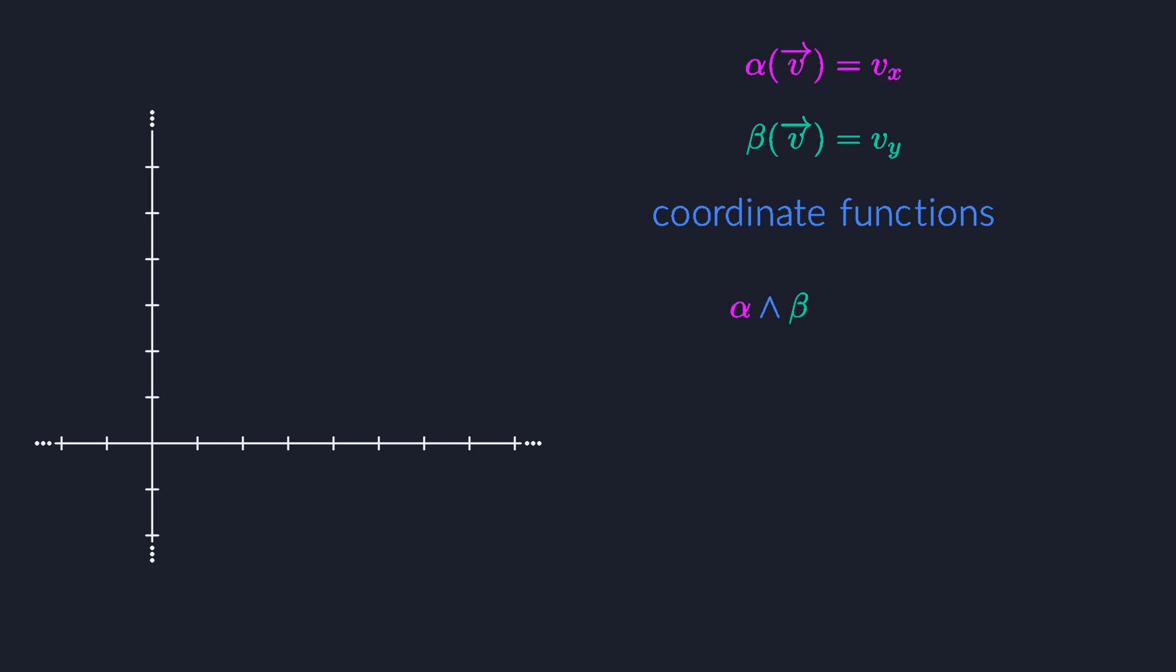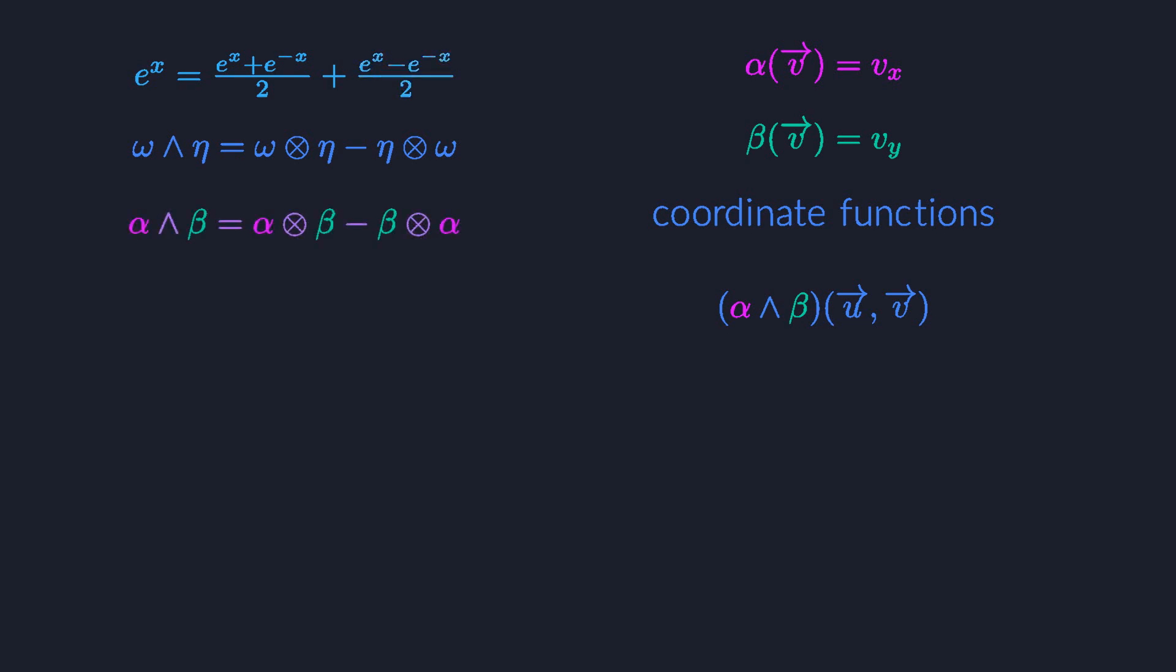We now glue them together using the wedge product. This creates a new, bigger function that takes two vectors as its inputs. The function is linear, but unlike the tensor product of alpha and beta, this one is anti-symmetric. What we want to do now is find out what this function does. Well, remember that we defined the anti-symmetric part of the exponential function like this. The wedge product is almost the same, except that it omits the two in the denominator. This is the official definition of the wedge product of two tensors.